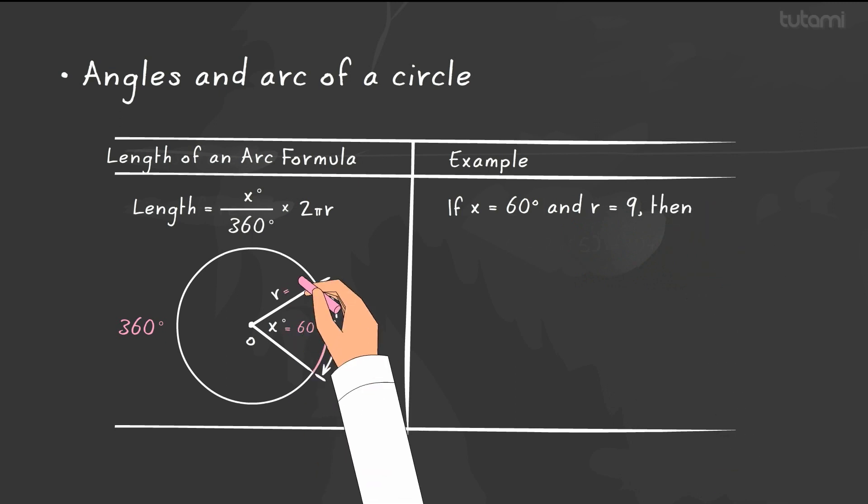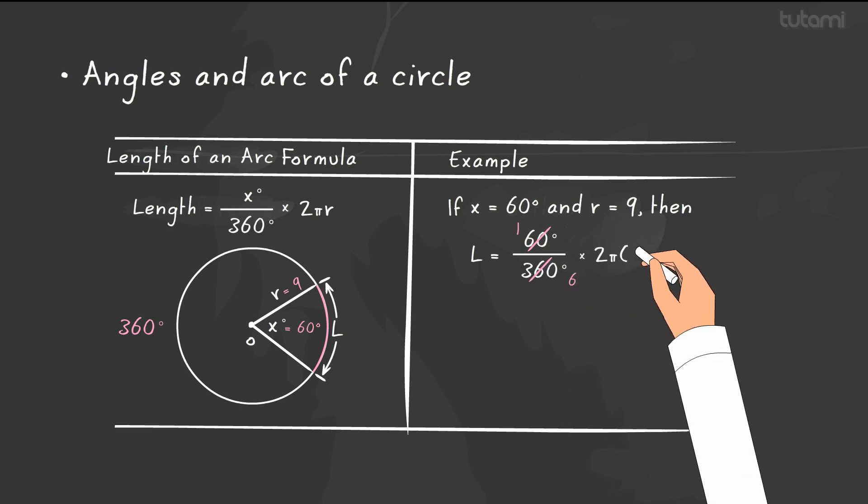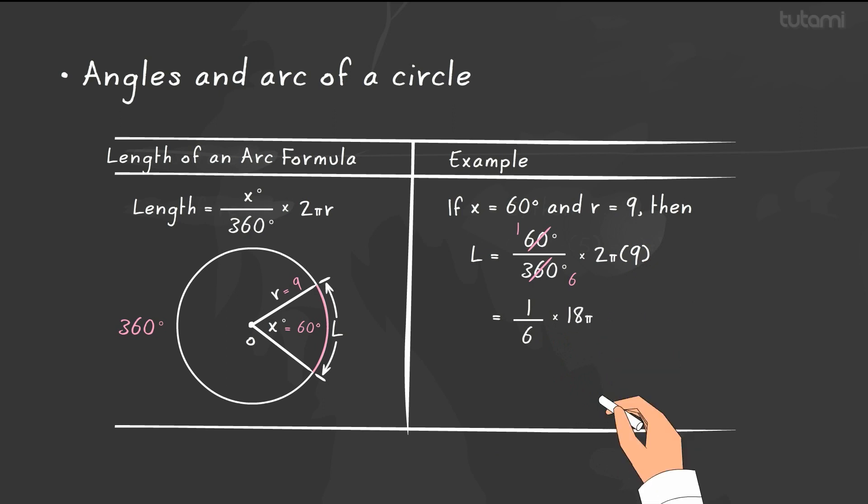We have 60 over 360, or 1/6, times 2π(9), giving us 1/6 of 18π, or 3π.